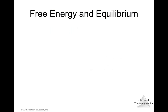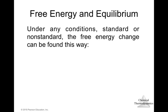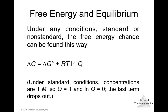Under any conditions, standard or non-standard, the free energy change is: ΔG = ΔG° + RT·ln(Q), where Q is the reaction quotient — the ratio of product to reactant concentrations — not necessarily at equilibrium. Under standard conditions, concentrations are 1 M, so Q = 1 and ln(1) = 0, meaning ΔG = ΔG°.